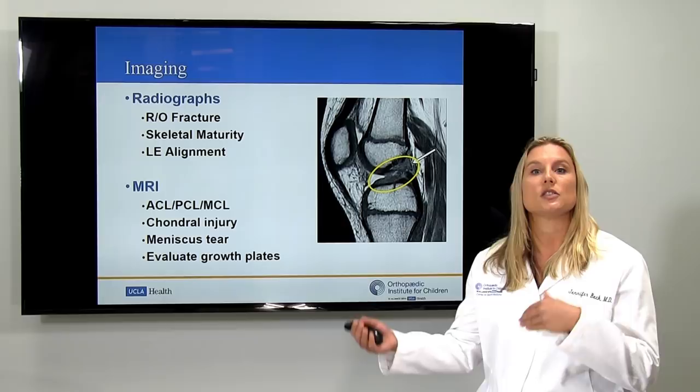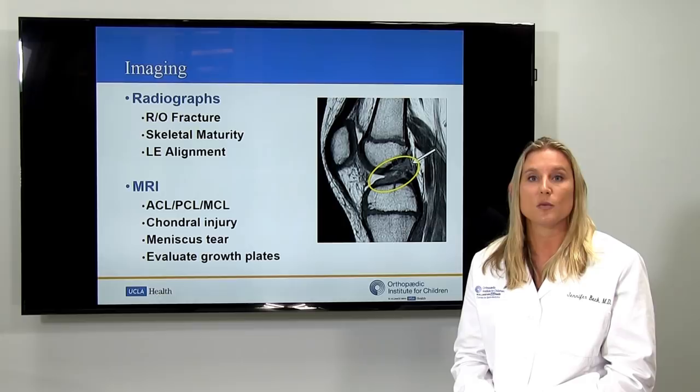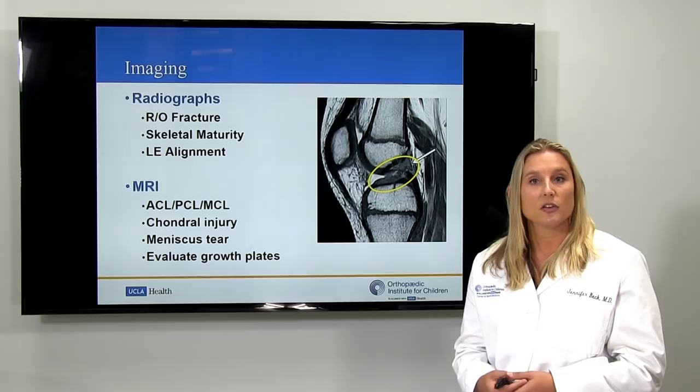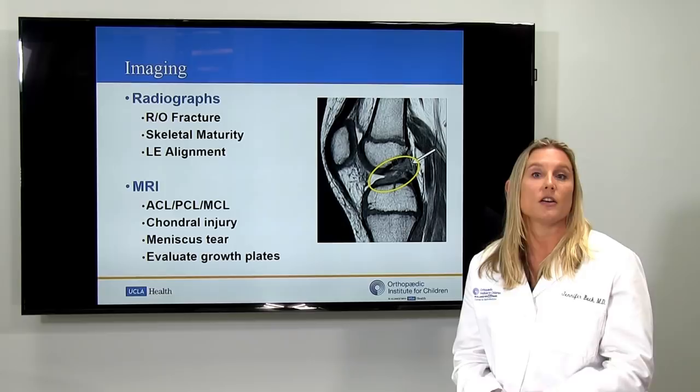That's why we get an MRI — a special test where you just lie down in a machine for a few minutes — and it gives us detailed pictures of all those ligaments. I want to look at the ACL, check for any cartilage damage, and assess the meniscus. The meniscus is a shock absorber cartilage that sits between the two bones and is very often injured at the time of an ACL injury. The MRI also lets me assess growth plates to determine treatment options.